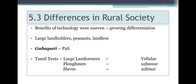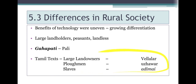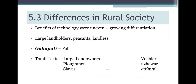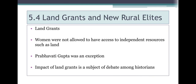Tamil literature also mentions different categories of people living in villages. A large landowner was called Vellalar, a plowman was called Uzzavar, and a slave was called Adimai. This was the structure of society during that period.